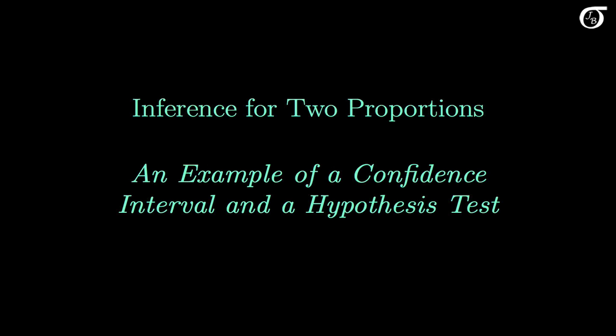Let's look at an example of a confidence interval and a hypothesis test for the difference in population proportions. We'll use Z procedures that are based on the large sample normal approximation.